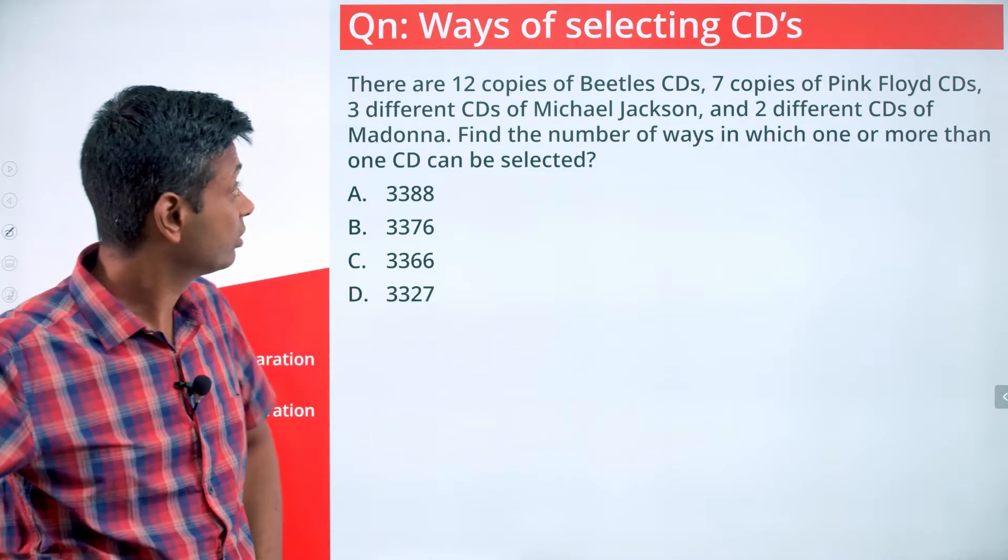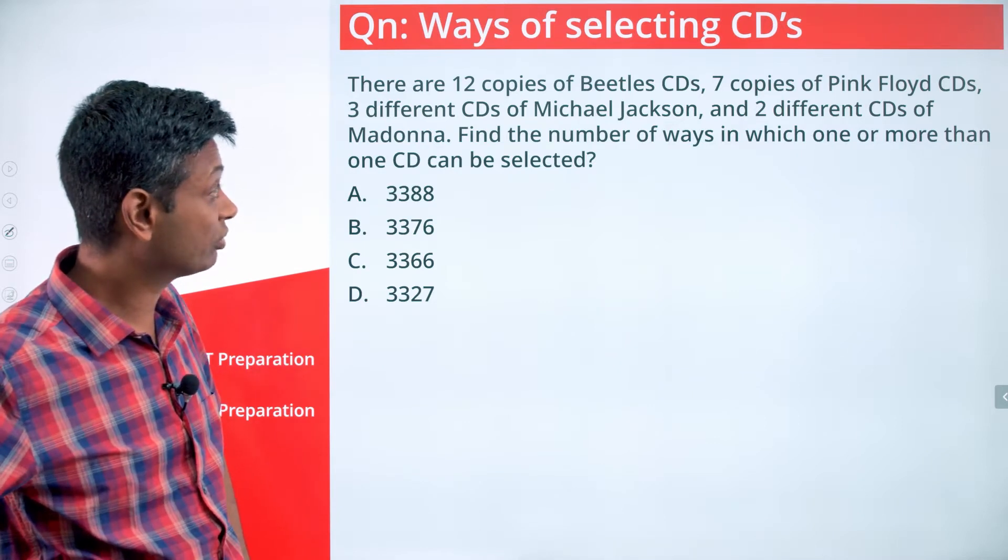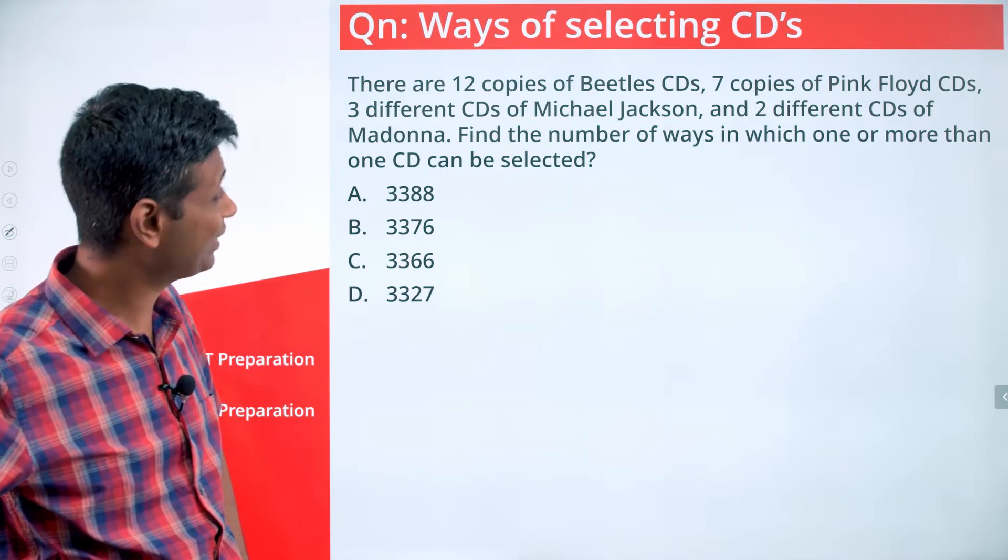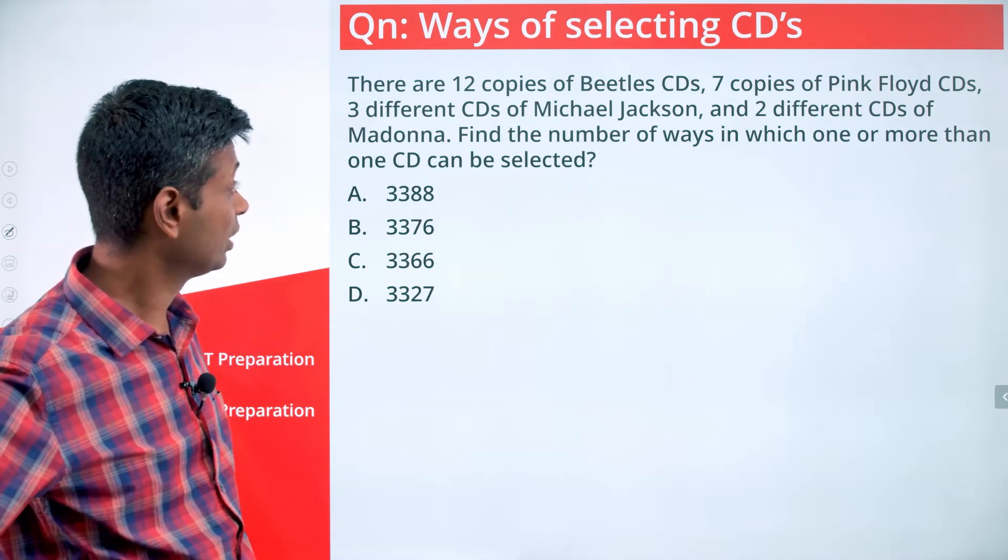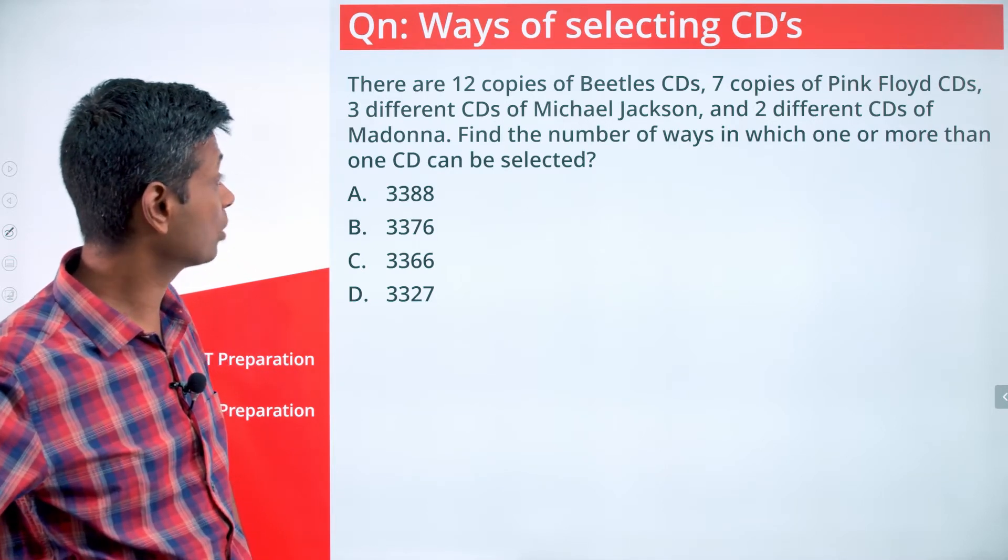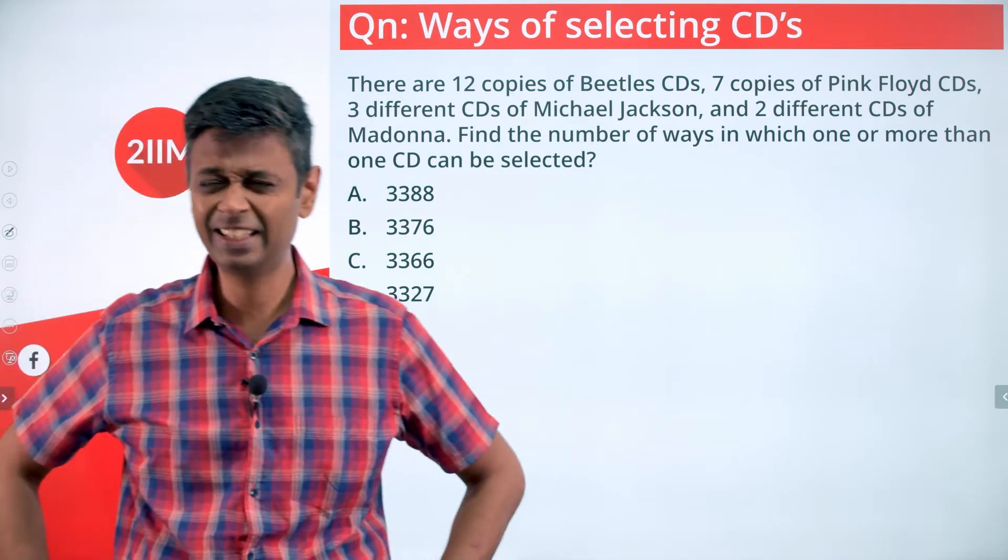There are 12 copies of Beatles CDs, 7 copies of Pink Floyd CDs, 3 different CDs of Michael Jackson, and 2 different CDs of Madonna. Find the number of ways in which one or more than one CD can be selected. The key thing here is understanding how we treat copies versus different CDs.